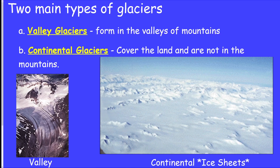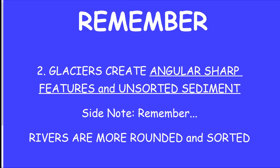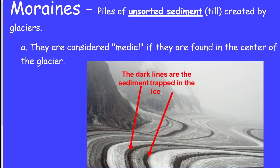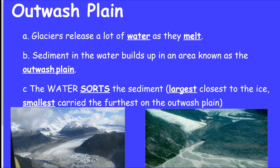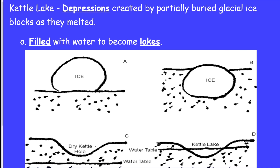Glaciers: valley glaciers are in mountains; continental glaciers are giant ice sheets like Antarctica. Glaciers create angular, sharp features and are all unsorted. A moraine is a pile of unsorted sediment created by a glacier. A drumlin is an elongated hill — a depositional feature — where the pointy end shows the direction the glacier was moving. An outwash plain is the only sorted glacial feature, formed when the glacier melts and creates a lake that sorts particles. A kettle lake forms when a giant piece of ice pushes into the ground, melts, and fills with water.